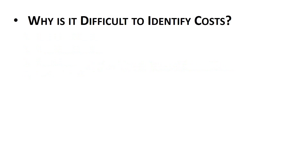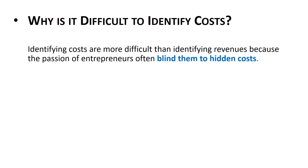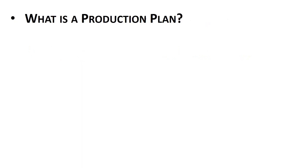Why is it difficult to identify costs? With revenues, identifying the source was not difficult — it was estimating demand that was the challenge. But with costs, even just identifying them becomes difficult. Identifying costs is more difficult than identifying revenues because the passion of entrepreneurs often blinds them to hidden costs — they are so passionate about the idea that they simply don't see certain costs.